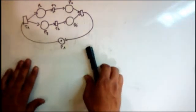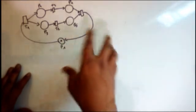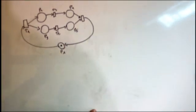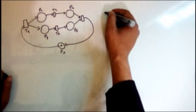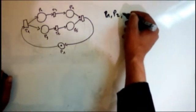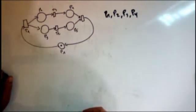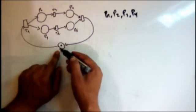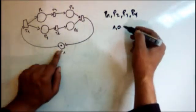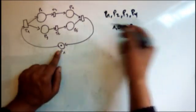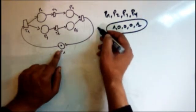Hello, I am Najib from Algeria. In this video I want to show you how to construct or build the coverability graph of a given Petri net. So I have this Petri net here. The first thing is we must specify the initial marking. We have five places: p1, p2, p3, p4, and p5. The marking of p1 is 1, and p2, p3, p4, and p5 are all 0. So that is the initial marking.